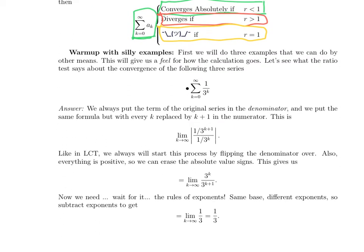So unlike the limit comparison test, it's pretty easy for us to fall into the case where r equals 1 and we don't get an answer. Otherwise, it will work perfectly. It's kind of hard to do this. So we're going to start with three examples that you can tell whether or not they converge without needing the ratio test. They're silly examples in the sense that we're doing overkill, but you will see how the calculations go and be able to use that practice in the future.